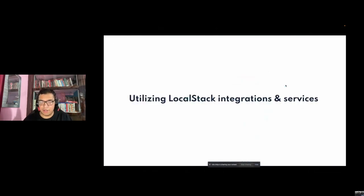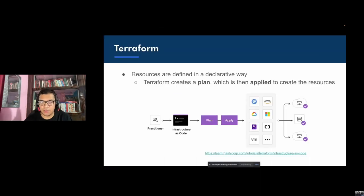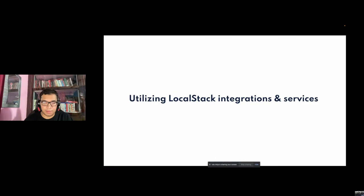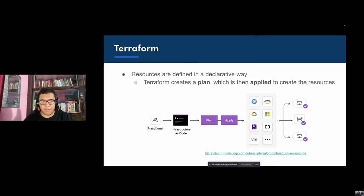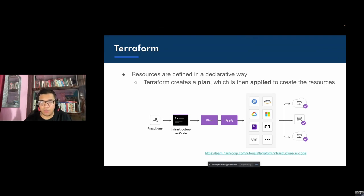Now that we understand LocalStack, let's use some integrations and services within LocalStack. The first is Terraform — an infrastructure as code framework that nicely fits with LocalStack. Terraform allows you to write your entire infrastructure in a declarative manner. It creates a plan and applies it to all resources, so you no longer have to go to the AWS console to create infrastructure manually. LocalStack also allows you to use Terraform, but to deploy everything inside LocalStack's local AWS infrastructure.